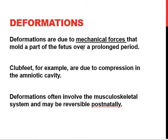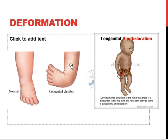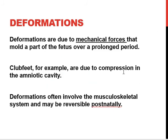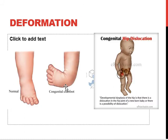The third type is deformations. Deformations are due to mechanical forces that mold part of the fetus over a prolonged period. For example, clubfoot can result from mechanical pressure or compression within the amniotic cavity. Deformations often involve the musculoskeletal system and may be reversible postnatally. Congenital hip dislocation is also an example due to outside pressure causing dislocation.